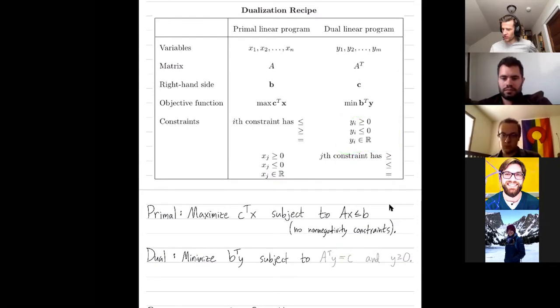And then how do I find the bounds on the variables of the dual? I look at the constraints of the primal. And on the primal, I had less than or equal to constraints. And so then on the dual, I have bigger than or equal to non-negativity on all the variables.